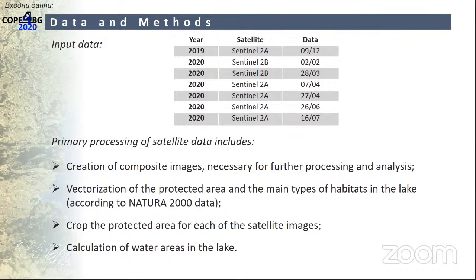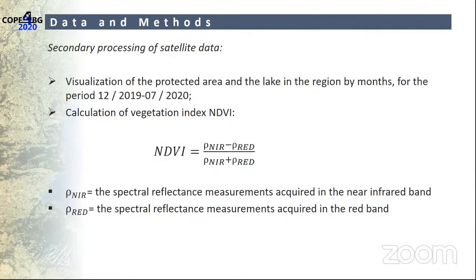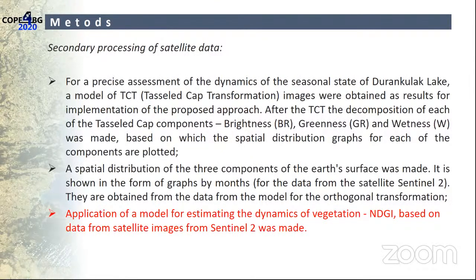The satellite data analysis includes: first, image compositing, visualization of the protection zone, and mapping of basic habitats following Natura 2000 standards; second, visualization of the protection zone across months using the NDVI vegetation index and orthogonal transformation — the Tasseled Cap Transformation — which shows environmental components including soil brightness, vegetation greenness, and water wetness. These three components are displayed in monthly graphics. NDWI may also be applied.